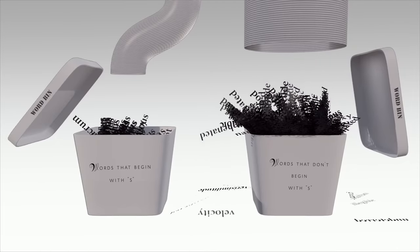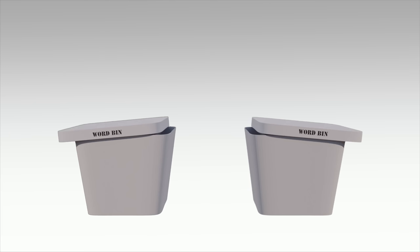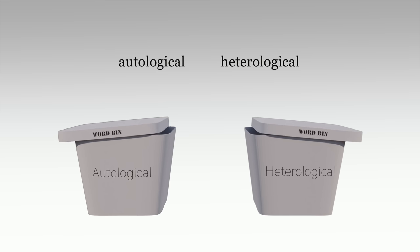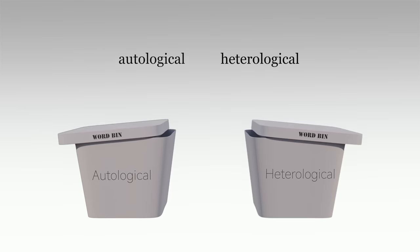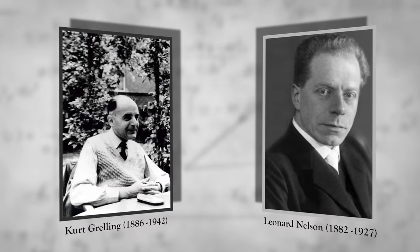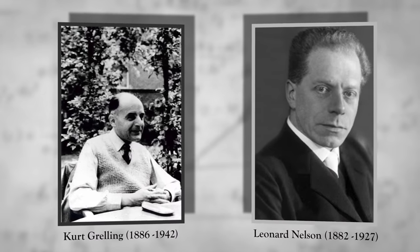But something really funny happens if we try this same tactic with the categories of autological and heterological. Specifically, if we sort words into these two categories, we can do so with every word in the English language except for two — the words autological and heterological themselves. When we try to sort these words, that is, when we ask are autological and heterological themselves autological or heterological words, there arises a paradox known as the Grelling-Nelson paradox, named for the German logicians who founded it in the early 20th century.